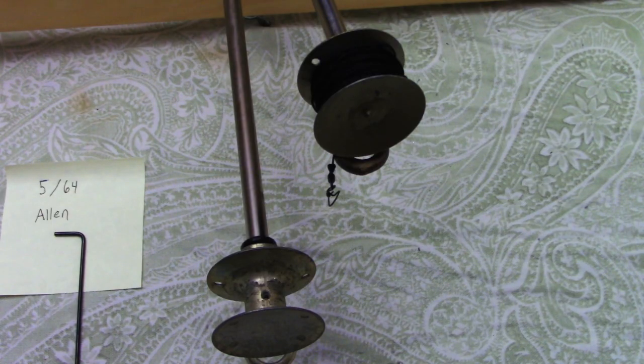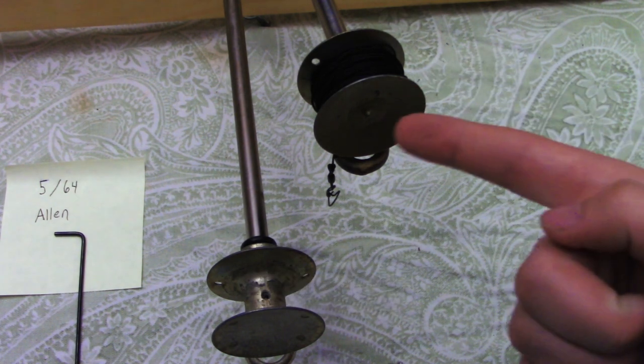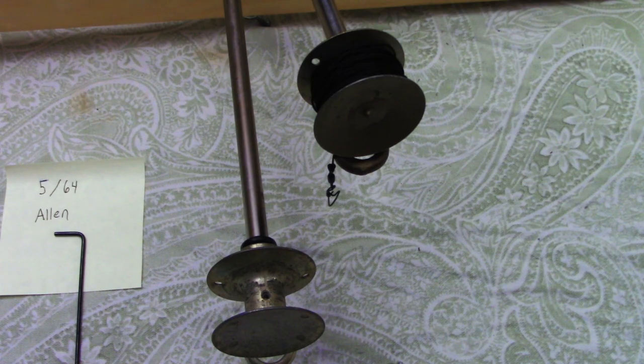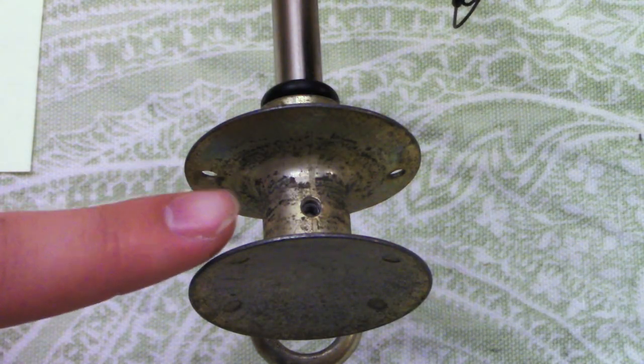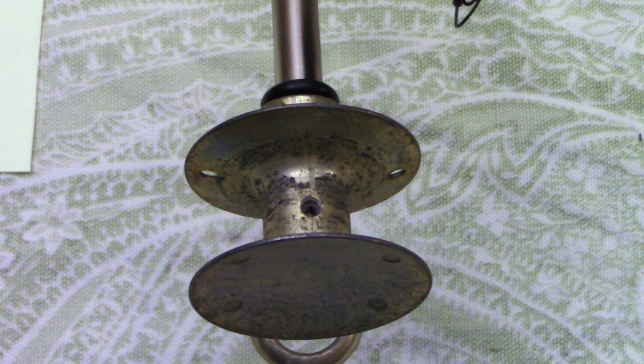Before we begin, I'd like to point out the difference between the Beaverdam tip-ups. The one here is the old version which requires a heat gun and you have to remove the solder by melting it. The newest version has this hex keyhole here and I'm going to show you how to re-lubricate and take this apart today.